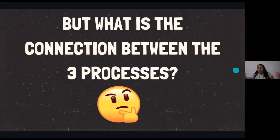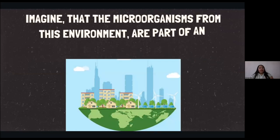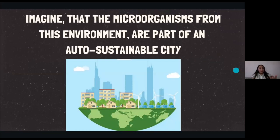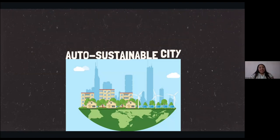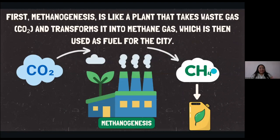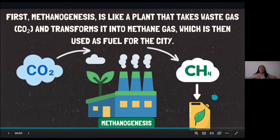But what is the connection between these three processes? I want you to imagine that these microorganisms from this environment are part of an auto-sustainable city. First, we have methanogenesis, which is like a factory that takes the waste gas — the CO2 — and transforms it into methane gas, which is then used as fuel for the city, like for the cars and everything.